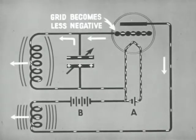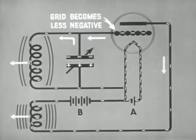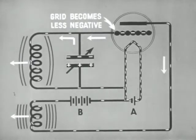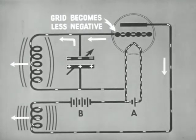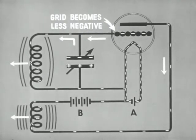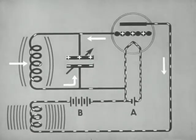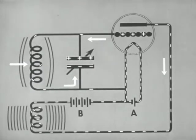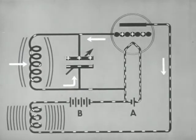As the plate coil field builds up, electrons flow away from the grid. Thus, the grid becomes less negative and more plate current flows. When the plate current reaches maximum, there is no change in the field. Hence, no current is induced in the grid coil. The field of the grid coil collapses and helps to charge the condenser.